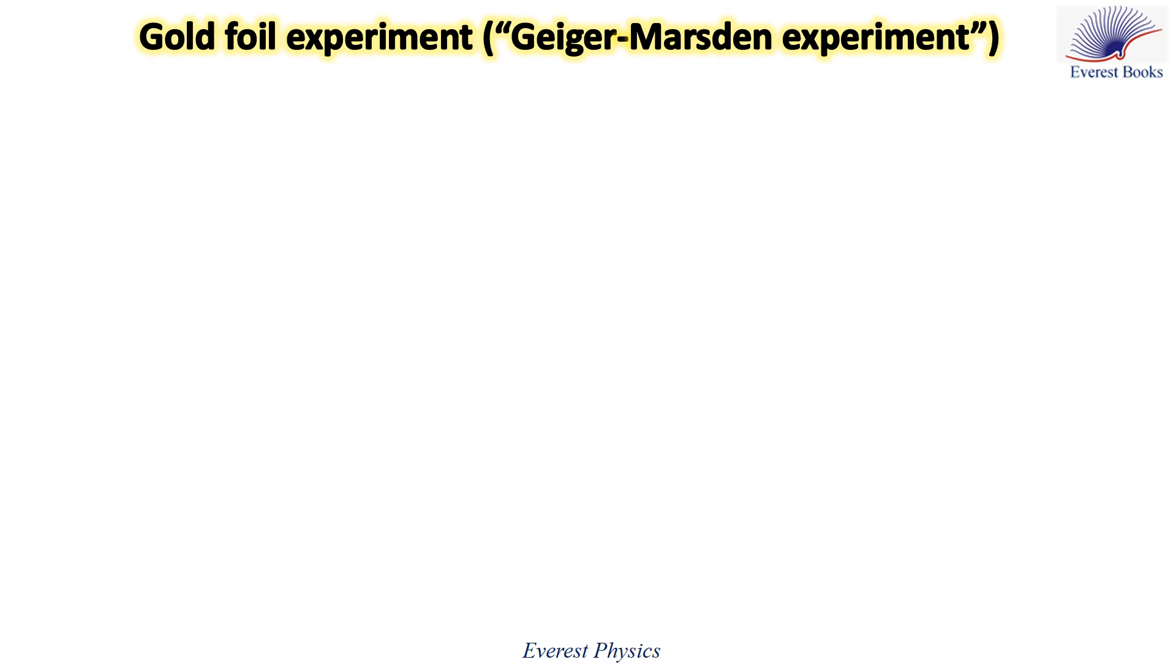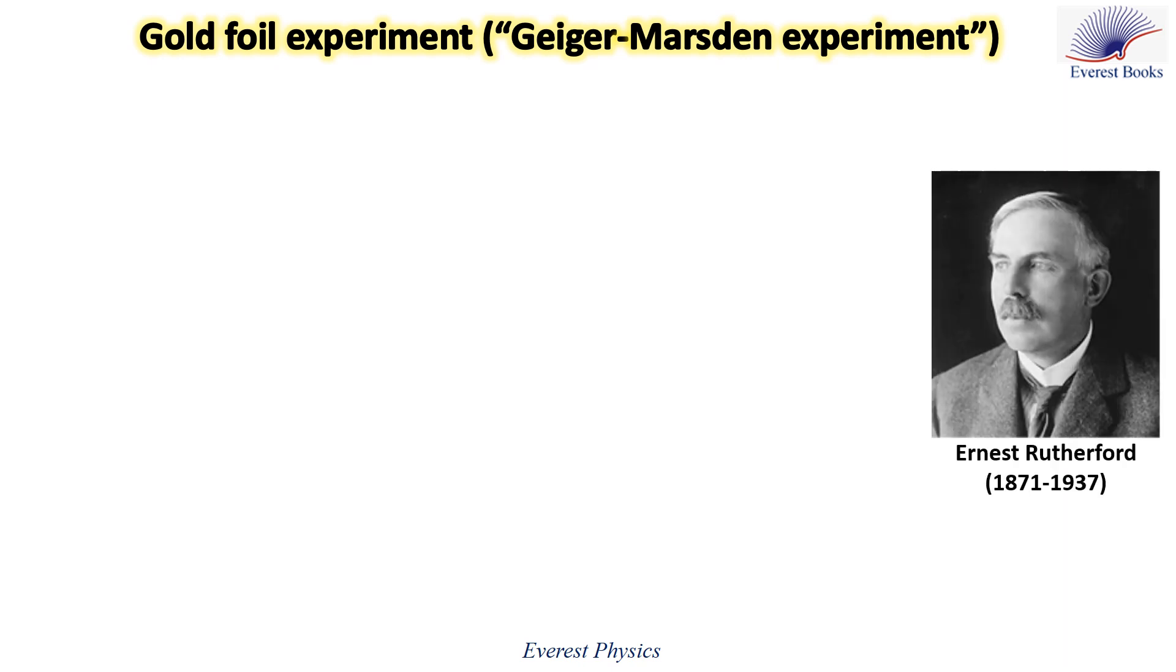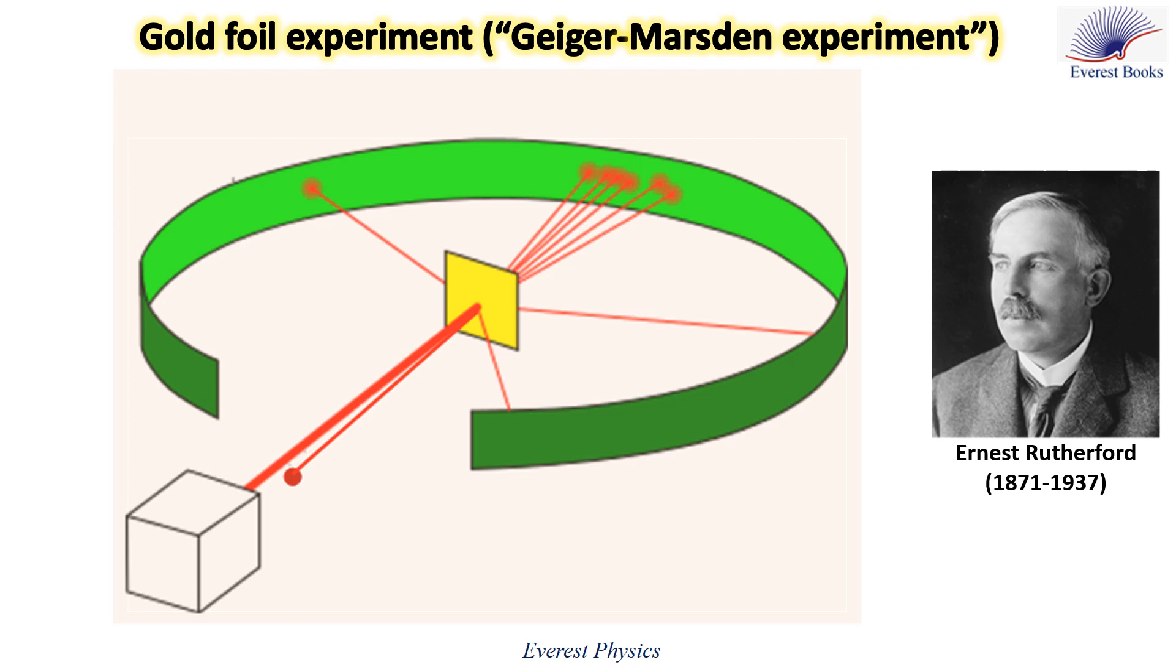Let's move to Rutherford's model of the atom. In 1911, Rutherford set evidence of the existence of the atomic nucleus in his famous gold foil experiment. This experiment is also called Geiger-Marsden experiment.